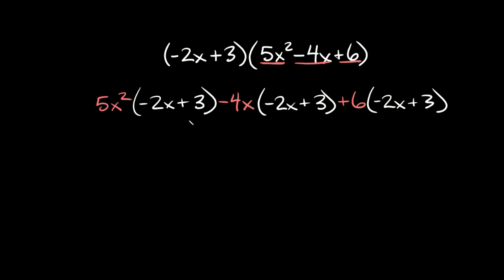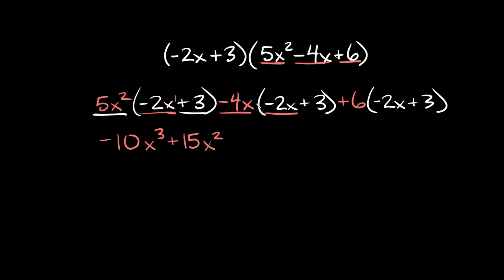Now distribute each term: 5x squared times negative 2x equals negative 10x cubed, and 5x squared times 3 equals plus 15x squared. Then negative 4x times negative 2x equals positive 8x squared, and negative 4x times positive 3 equals negative 12x. Lastly, positive 6 times negative 2x equals negative 12x, and 6 times 3 is 18, so plus 18.